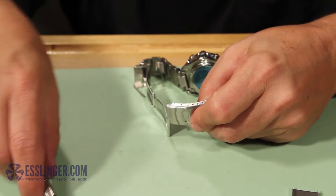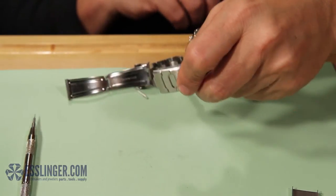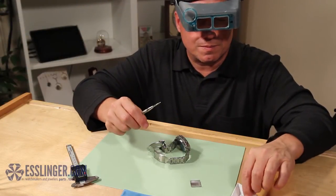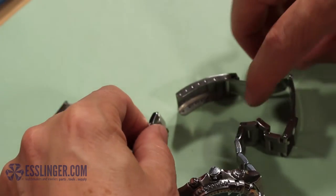Be aware, you might accidentally fling the spring bar across the room if you are not careful. Grab the loose spring bar and place it in your parts tray. Let the band clasp fall apart.